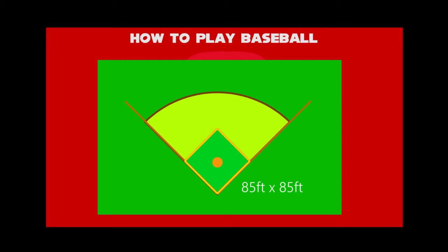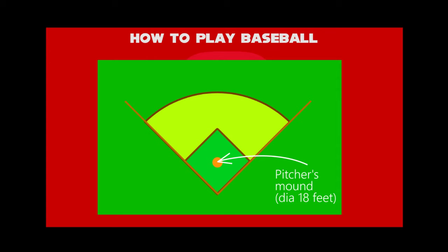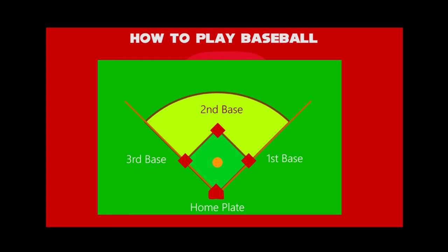The inner square area is 85 by 85 feet. In the inner square area, the central part is the pitcher's mound, with its diameter 18 feet. These four corners surround first base, second base, third base, and home plate,